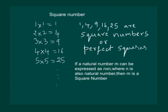Hence, in general, if a natural number m can be expressed as n into n, where n is a natural number, then m is a square number.